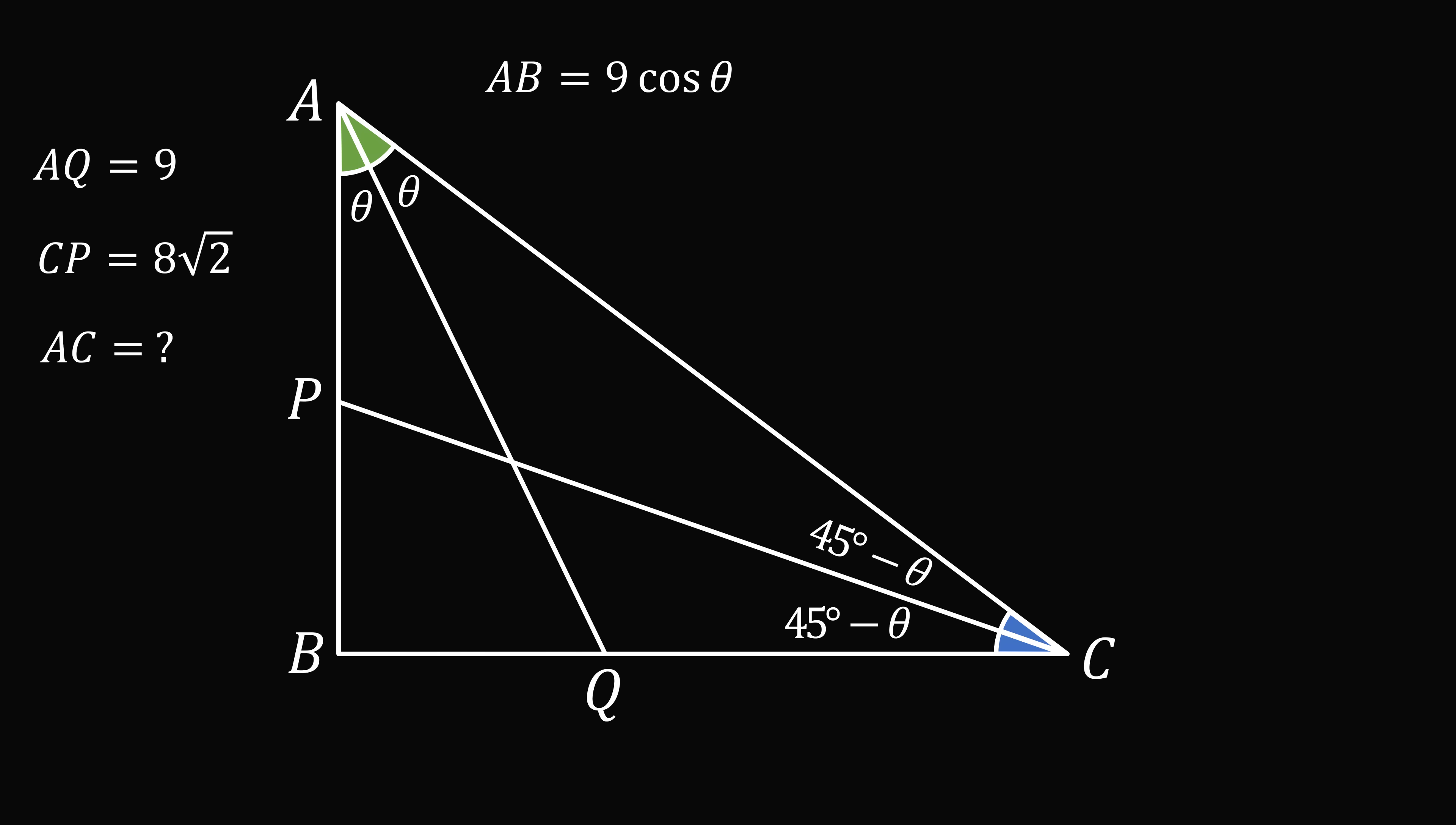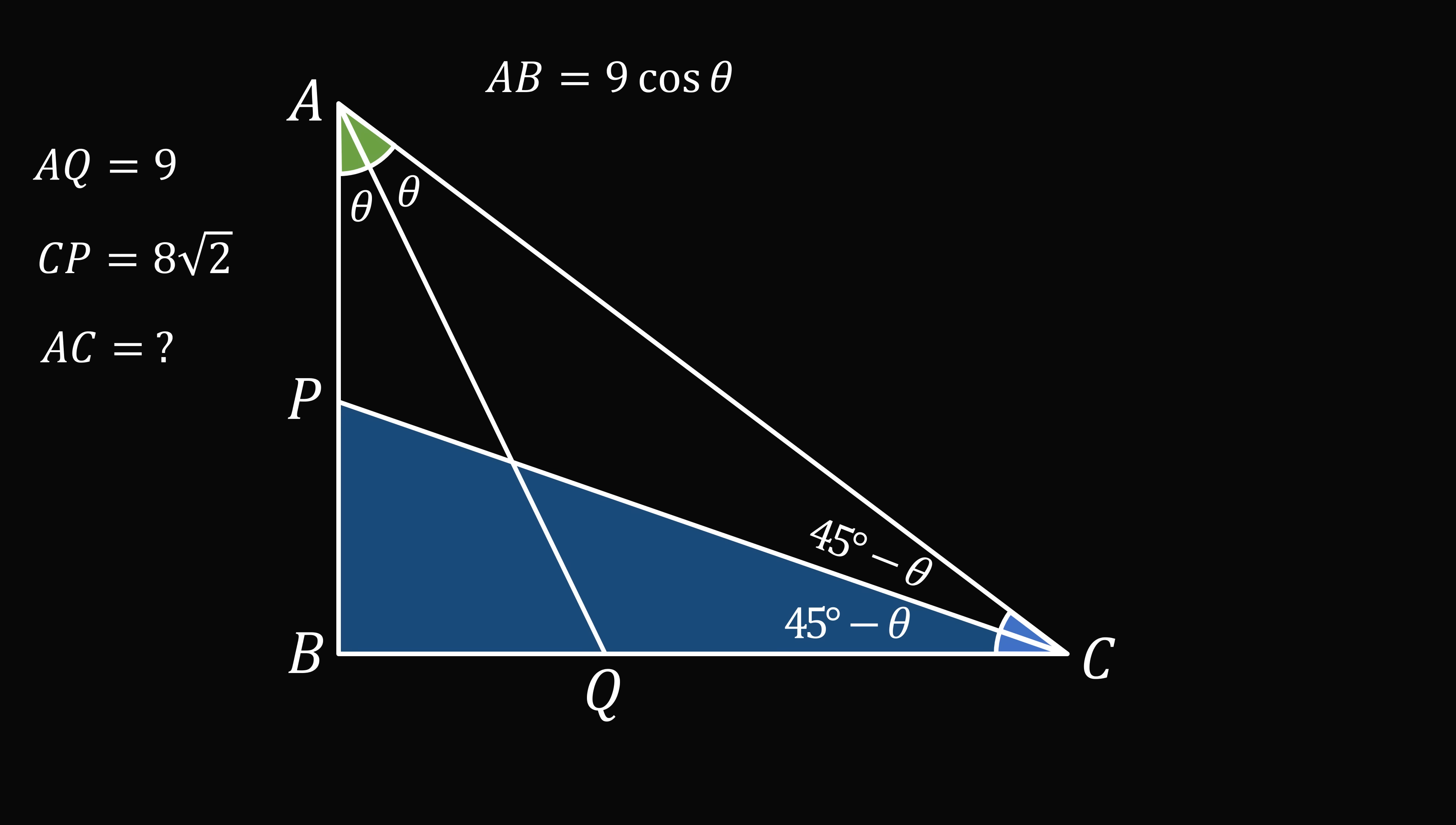Now, consider triangle BPC. Here, we have BC is equal to CP multiplied by the cosine of 45 degrees minus theta. We know the length of CP is equal to 8 root 2. We can use the cosine formula for the difference of angles. We now evaluate cosine of 45 degrees is equal to sine of 45 degrees is equal to 1 divided by root 2. We put that in and then we distribute, so we get BC is equal to 8 cosine theta plus 8 sine theta.